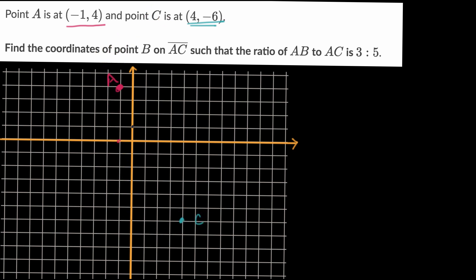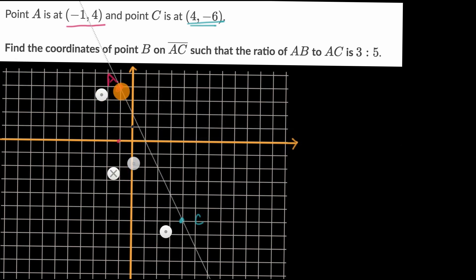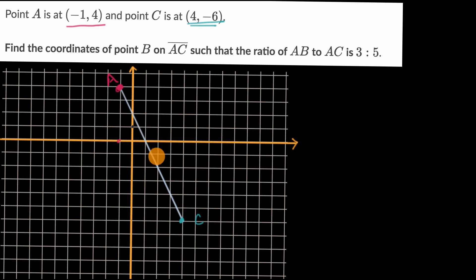And so segment AC is going to look like that. The ratio between the distance of A to B and A to C is three to five. Another way to think about it is B is going to be three fifths along the way from A to C — three fifths along in the X direction and three fifths along in the Y direction.